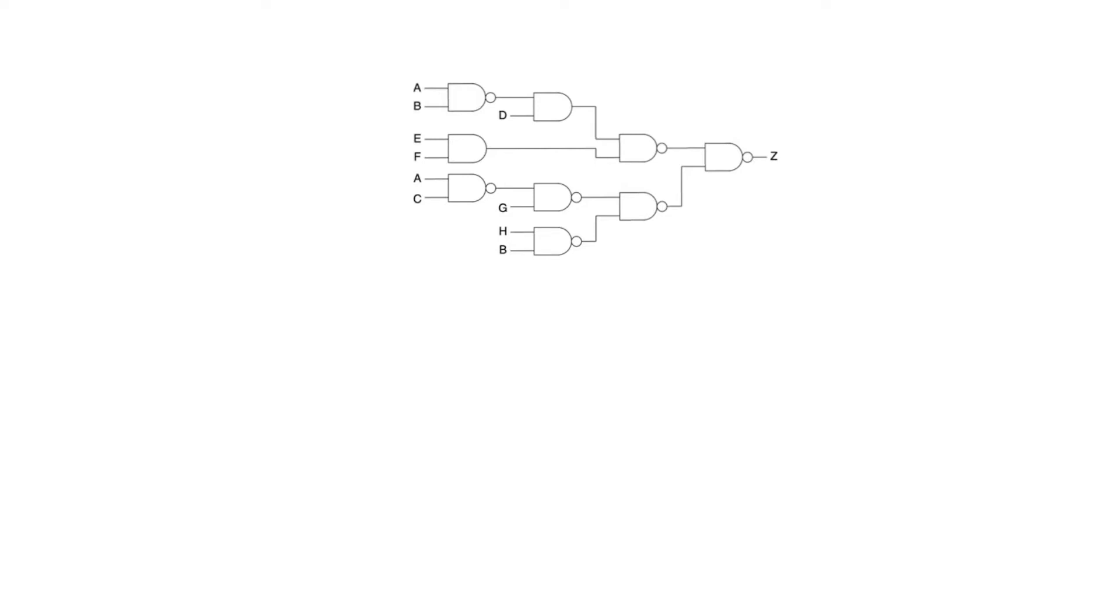Secondly, it only allows you to deal with functions with up to four variables. It's not practical to draw Karnaugh maps for any larger number of input variables. Most combinational logic blocks are going to have a lot more inputs and are going to be a lot more complex than just four variables.